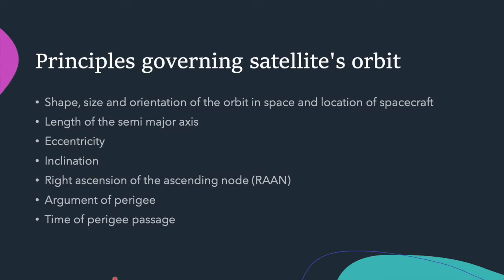To locate a satellite in its orbit, we require a set of parameters called orbital elements or Keplerian elements. These six Keplerian elements determine the shape, size and orientation of the orbit in space and location of a satellite.